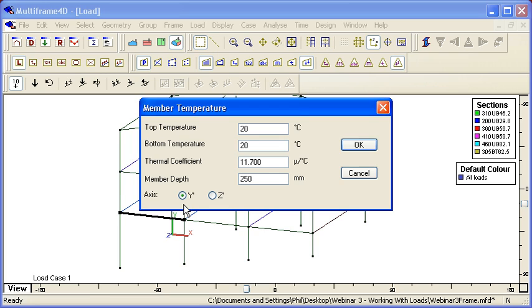Notice that it's actually possible to have that thermal gradient through the depth of the web or across the flange. So for this one, because my top and bottom are the same, that will have no effect. I just need to put in those values.